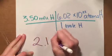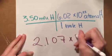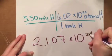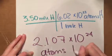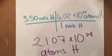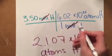That's 2.107 times 10 to the 24th atoms hydrogen. You end up getting atoms because the moles and the mole cross out, and so it leaves you with that.